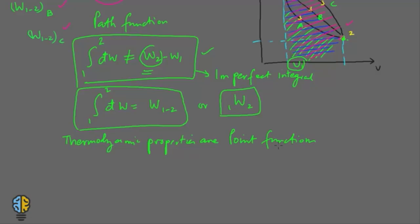Point functions are values which depend upon the particular state and not on the path that the system would undertake. So if there is a change in volume from V1 to V2, this is given as V2 minus V1 — we have a value of volume at state 2 and a value of volume at state 1. This kind of integral is called a perfect integral.